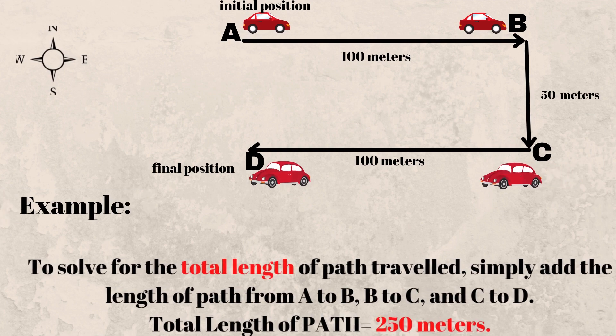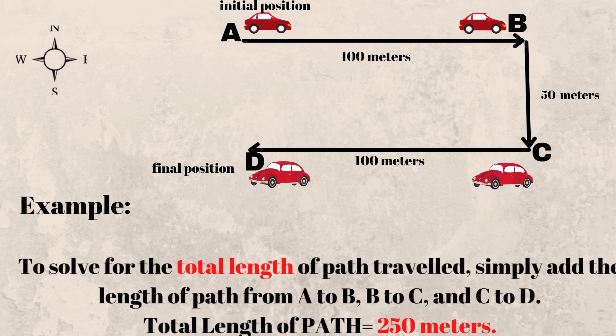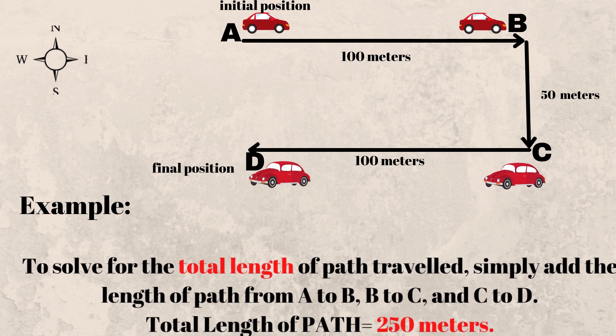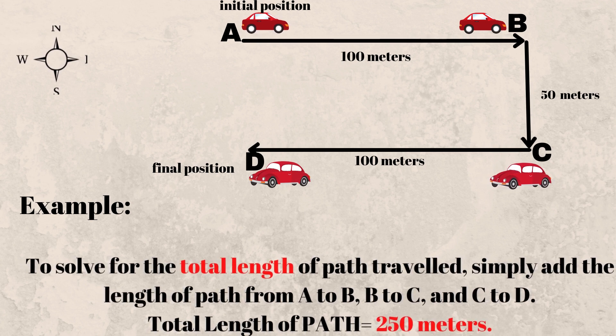For example, to solve for the total length of path traveled, simply add the path from A to B, B to C, and then C to D. So the total length of path is 250 meters.